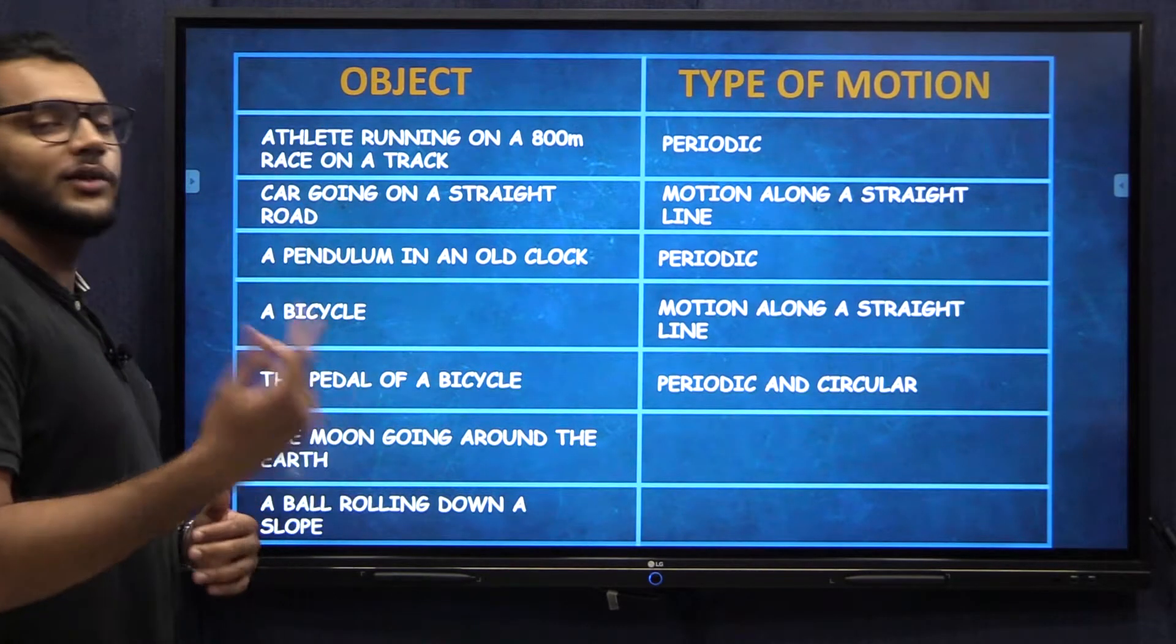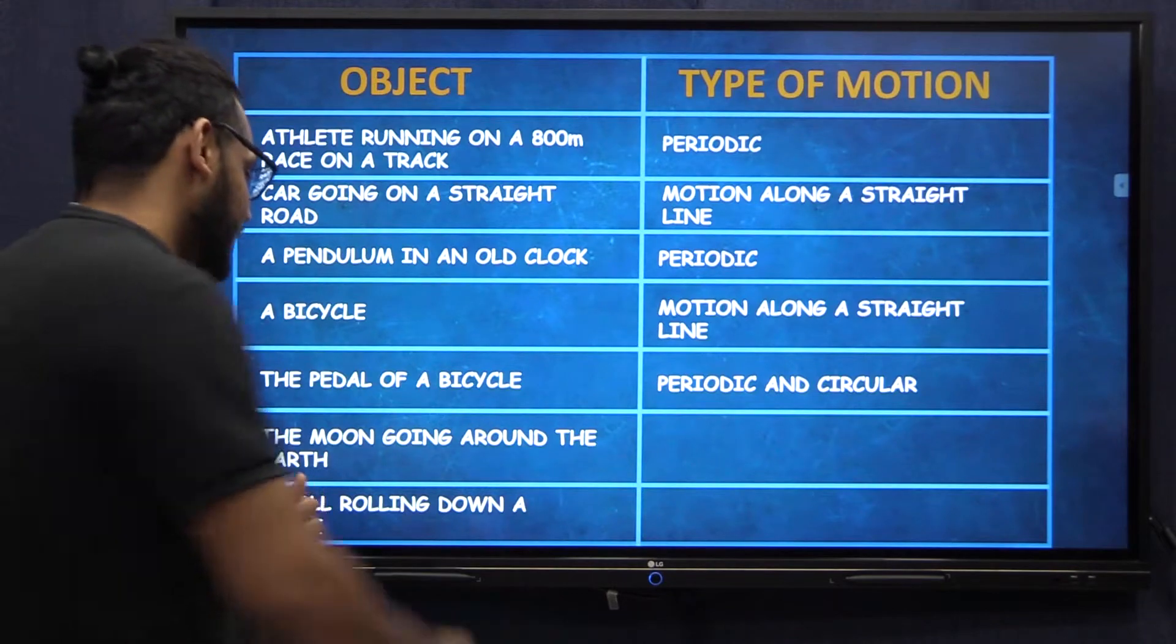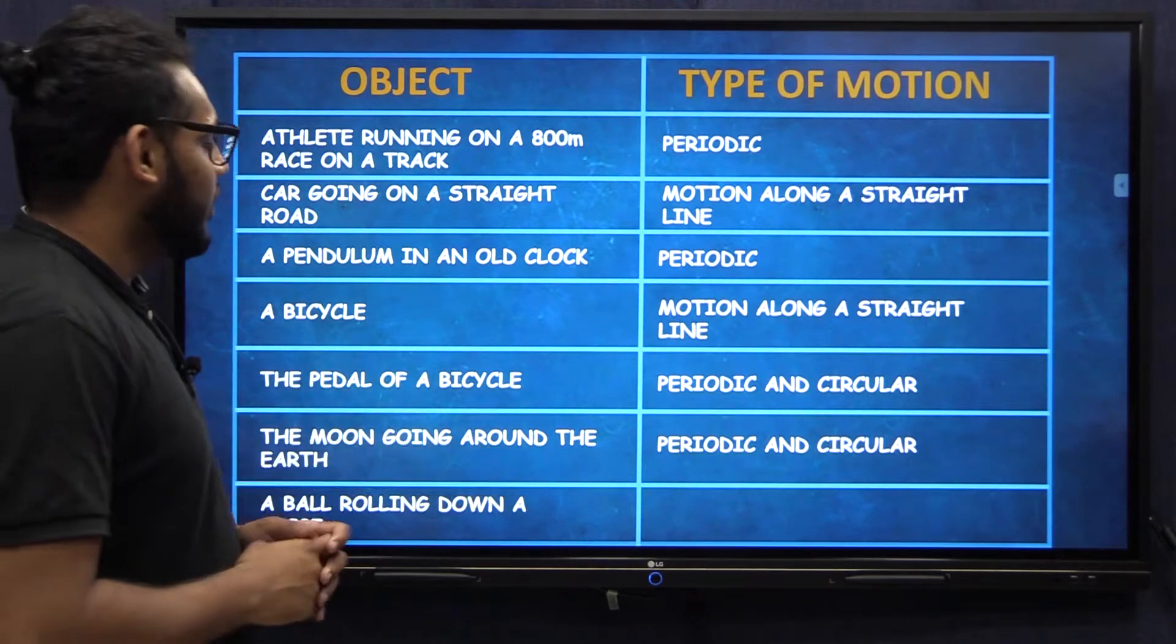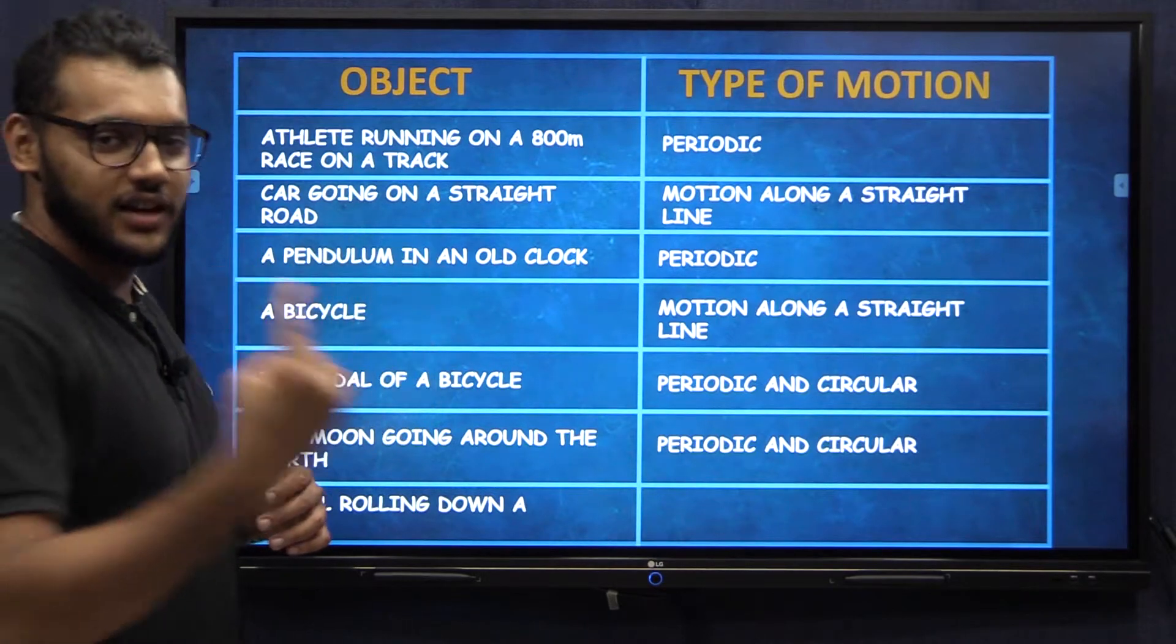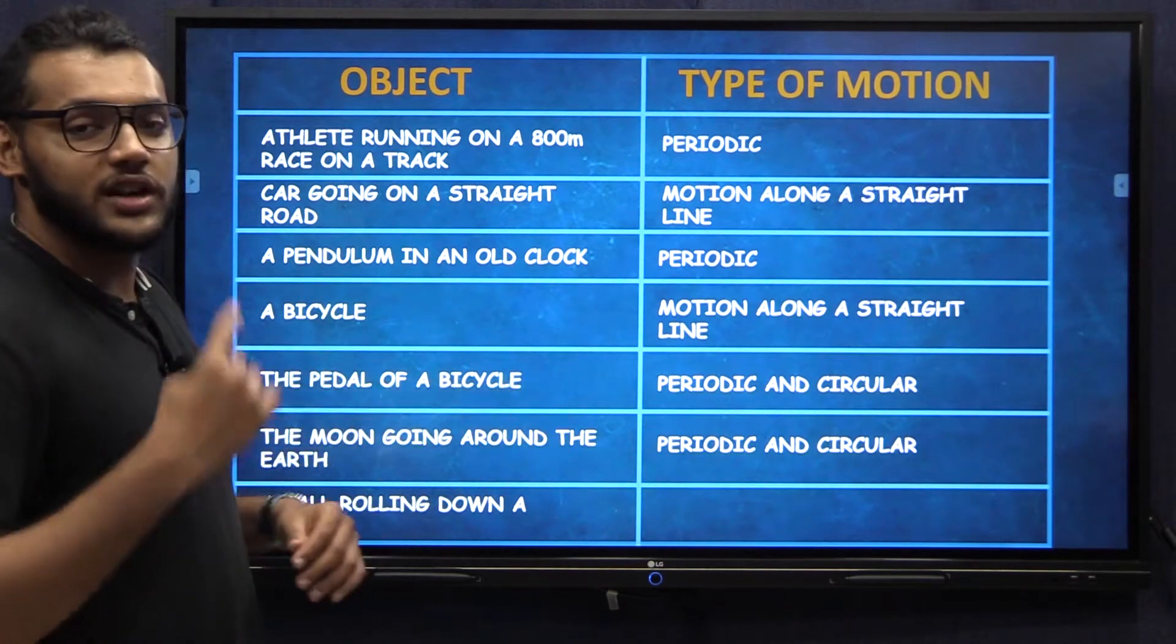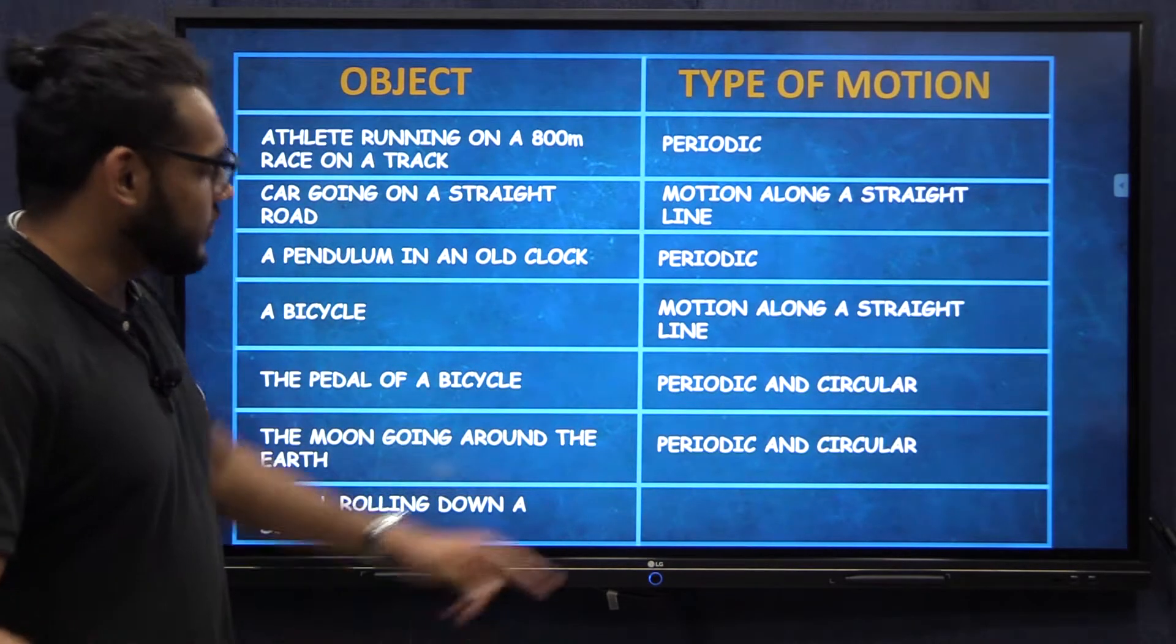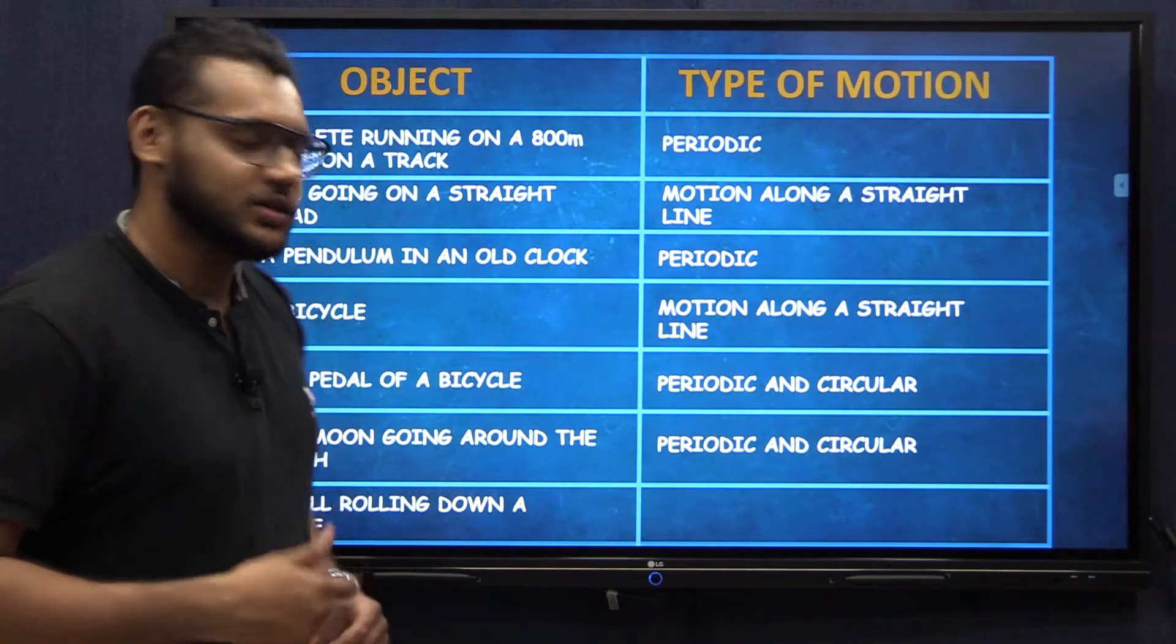What about the moon going around the earth? So those of you who said the same answer, that's correct as well. The moon not only goes around the earth in circles, it also goes around the earth in about one month once. So that repeats itself so it's periodic and it goes in a circle so it's circular.